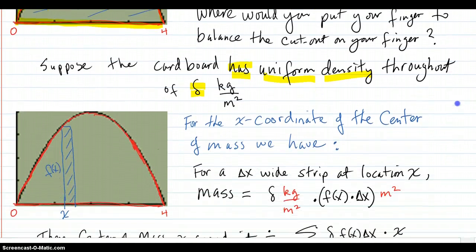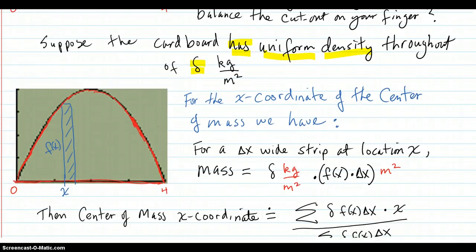For the x-coordinate of the center of mass, we consider a strip of area located at an x location. And we try to find the mass of that strip. So for a delta x wide strip at an x location, the mass is the density delta kilograms per meter squared times the area. So that happens to be the height of f of x at x times the delta x. And the meters squared cancel out, you get kilograms, that's mass.